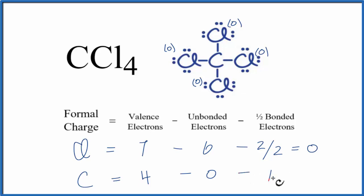And then we subtract 1 half of the bonded valence electrons. We have 2, 4, 6, 8 of those. 4 minus 0 minus 4, that equals 0.